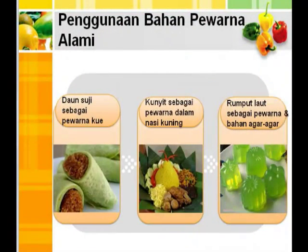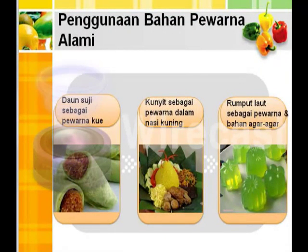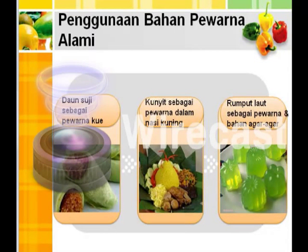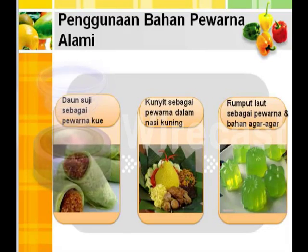Dalam penggunaannya, daun suji digunakan sebagai pewarna kue, kunyit sebagai pewarna dalam nasi kuning, dan rumput laut sebagai pewarna dan bahan dari agar-agar.